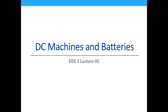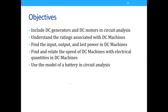The objectives of this lecture: we will add DC generators and DC motors in our circuit analysis, and we'll understand the ratings associated with DC machines. You'll be able to understand what the ratings mean. We think of energy conversion — there's an input power, output power, and lost power in these machines. We'll relate the speed of rotation of DC machines with its electrical and mechanical characteristics.